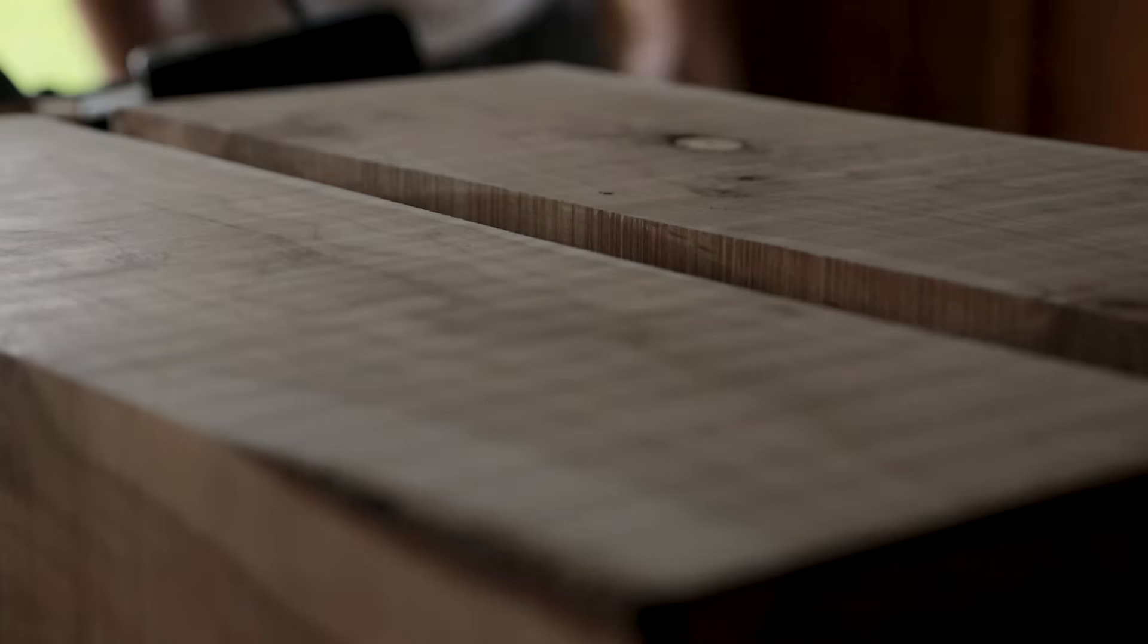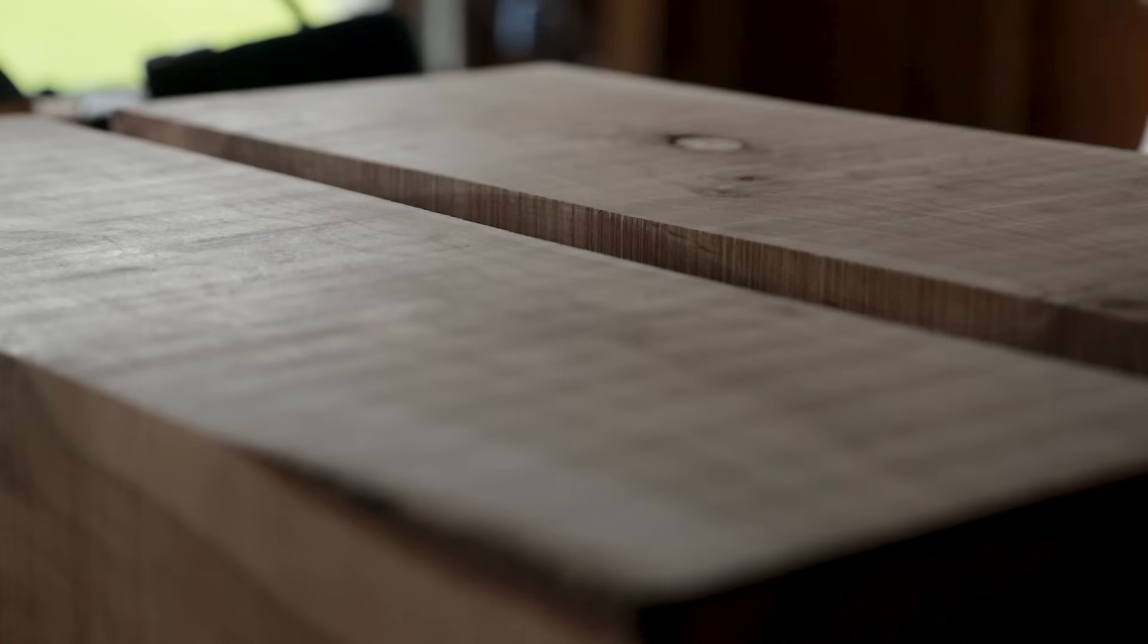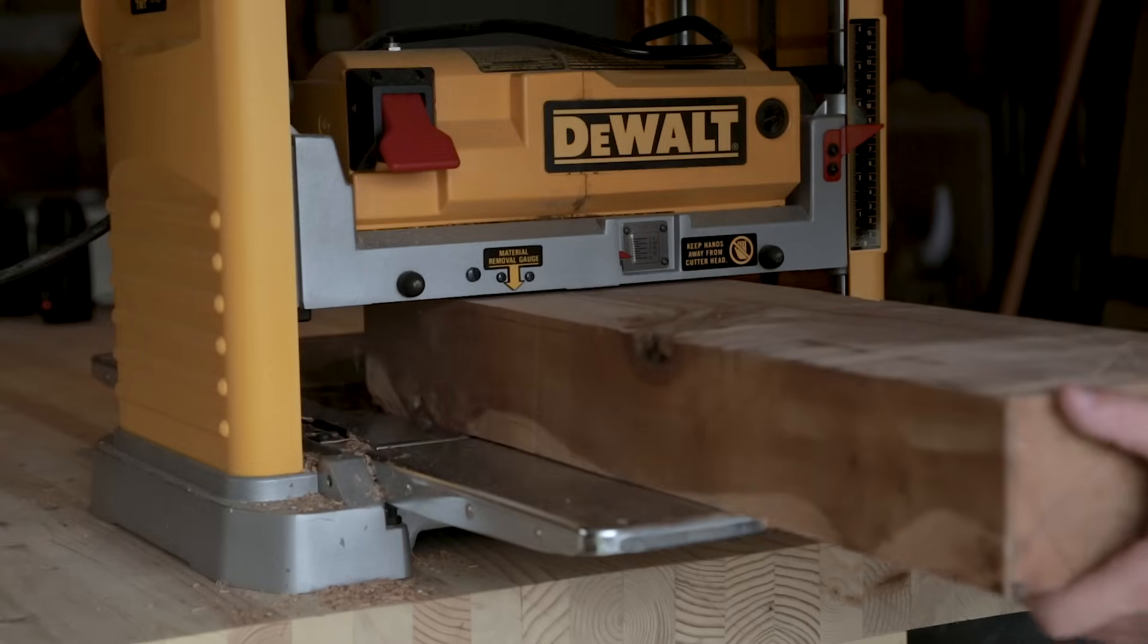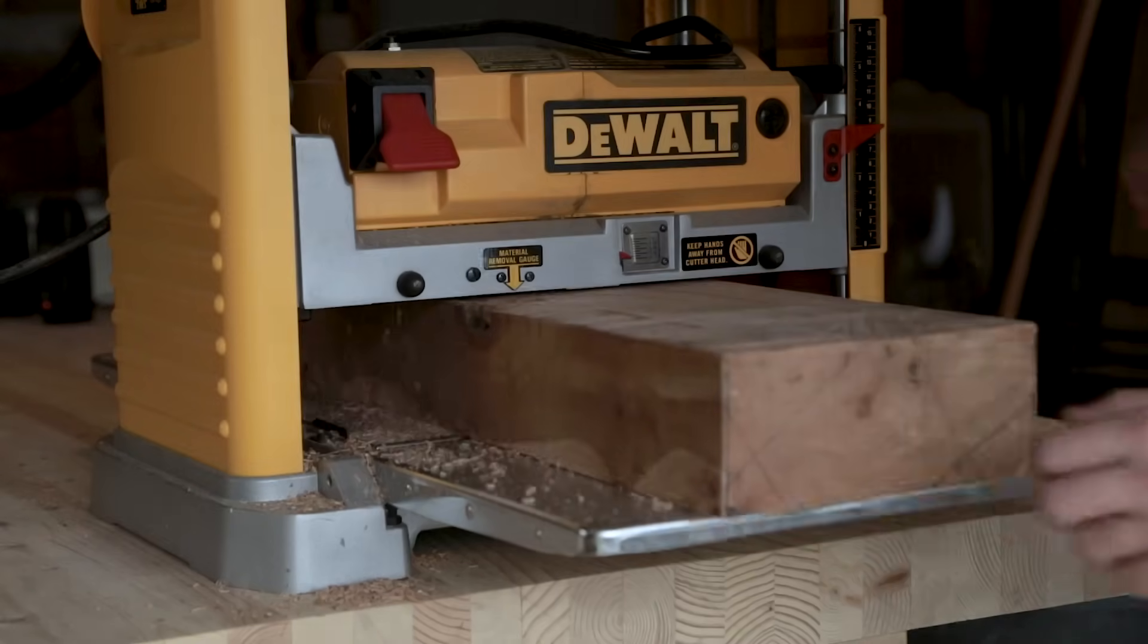I came back the next day ready to turn these blanks into stool seats. To square up the piece I started at the planer and brought the pieces to the thickness I was looking for, which was something about 10 quarters.